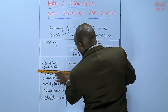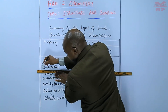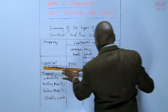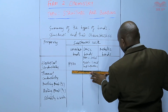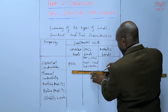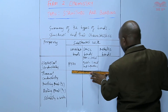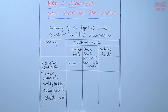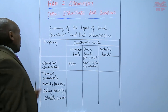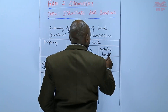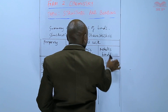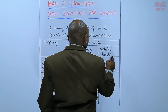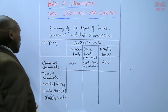Ionic bonds are only good conductors in liquid form — that means when they are molten and when they are in aqueous state. For metallic bonds, their electrical conductivity is good throughout.